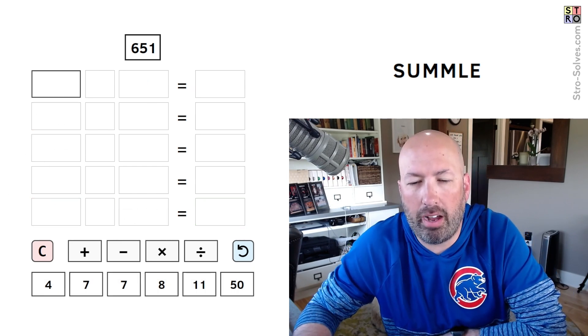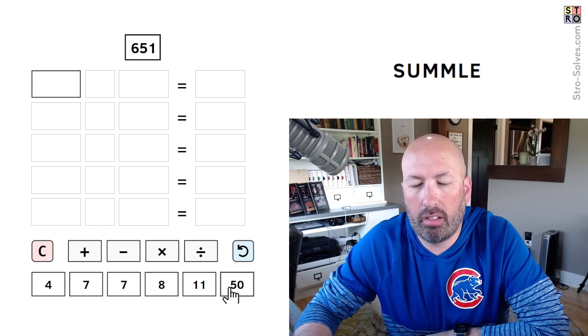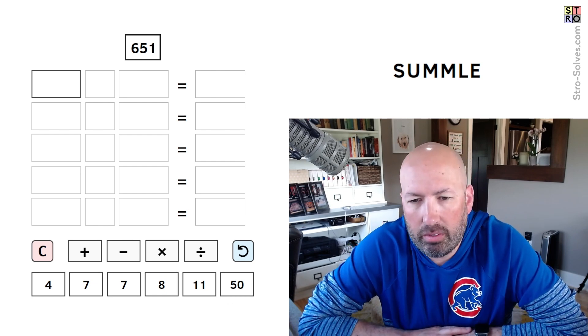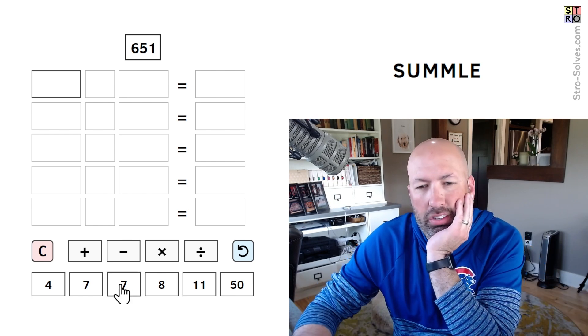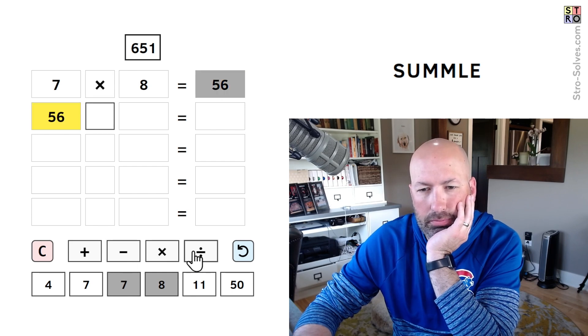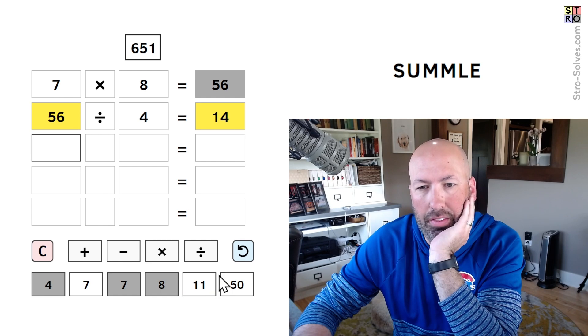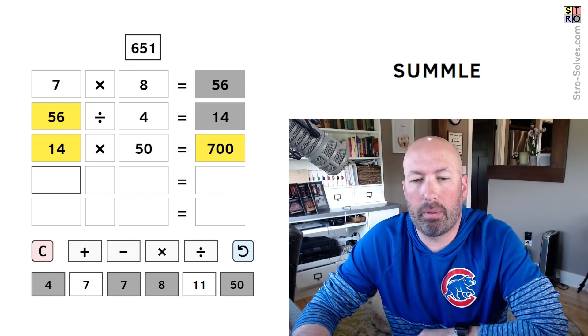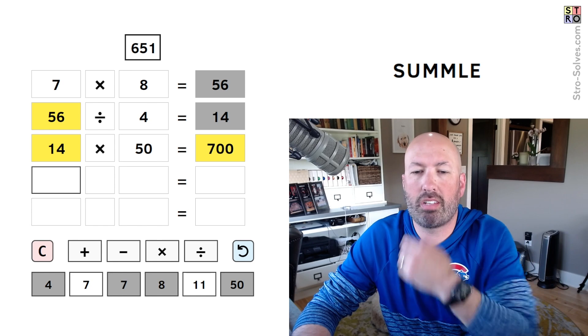Okay, so I've cleared it out. Well, I was thinking about trying to do 50 times 14 and subtract 49. I don't see a good way to get 14. You know, 56 divided by 4 gets us 14, and then we can multiply that by 50 to get to 700. But the problem is I wanted to subtract 49, and at this point we can't do 49 because we used the 7.